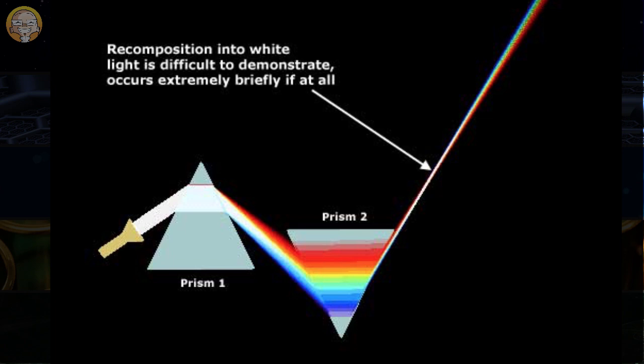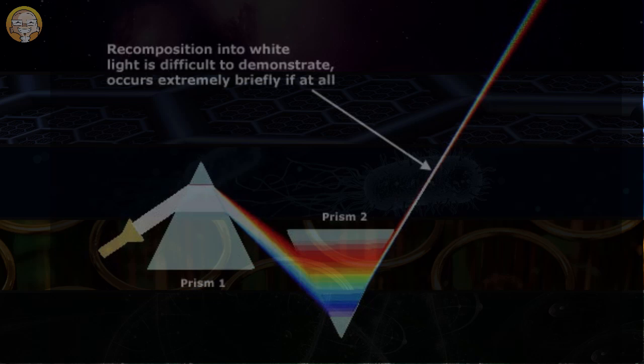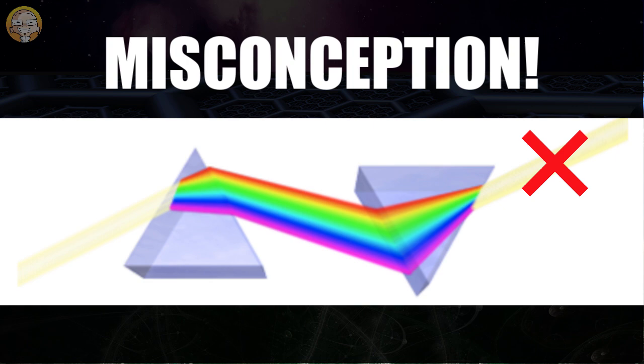While it is technically possible to recompose a spectrum with a second prism, it is exceedingly difficult to do so. The spectrum can only be recomposed at a very small point and it certainly cannot be recomposed into a beam of white light. To do that you would need at least three prisms.